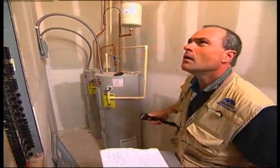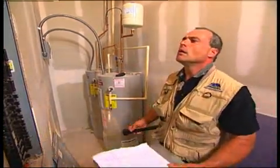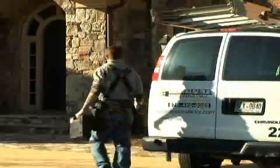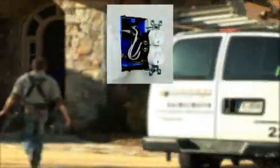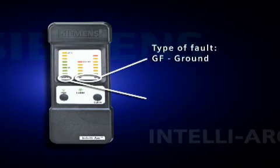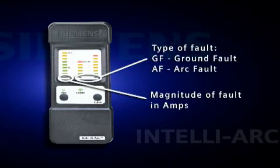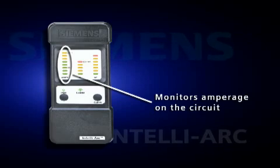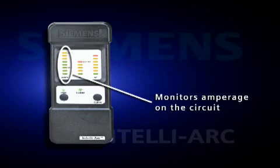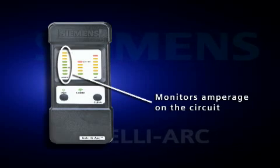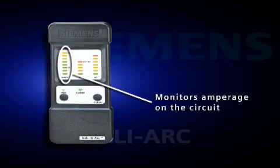Arc faults are often intermittent, which can make troubleshooting a branch circuit very difficult. In these cases, it is important to determine whether the fault condition exists in the permanent wiring, in connected equipment, or in a power cord. The IntelliArc Diagnostic Tool presents information as to the type and magnitude of fault. Since the fault may not cause an AFCI to trip for various reasons — for example, the duration is too short or the current level is too low — the tool provides an indication showing how close an event is to causing an AFCI to trip.